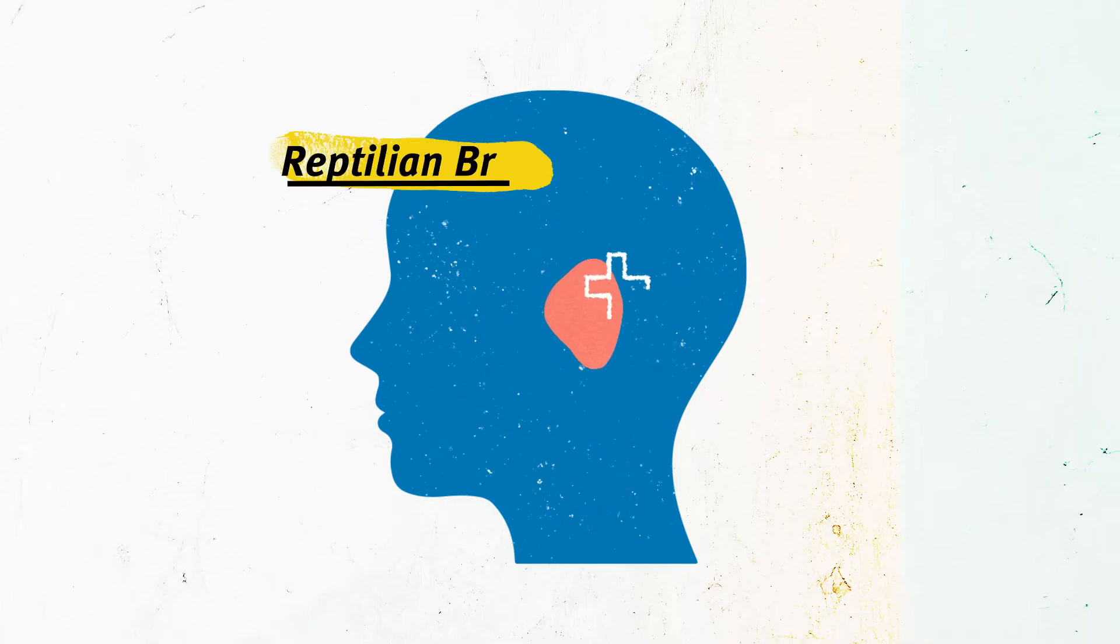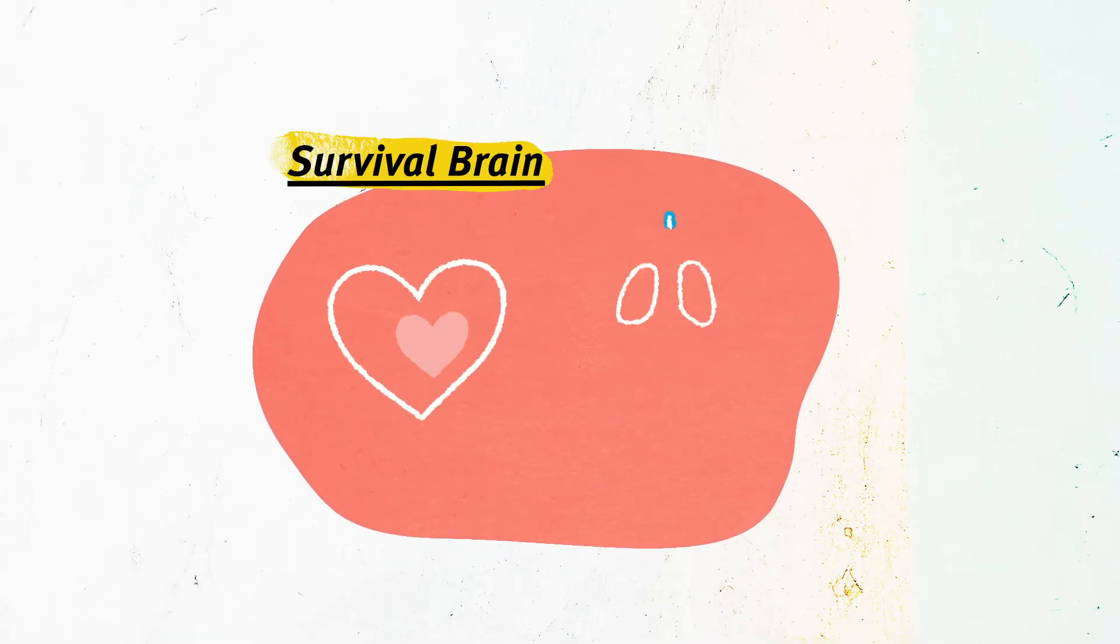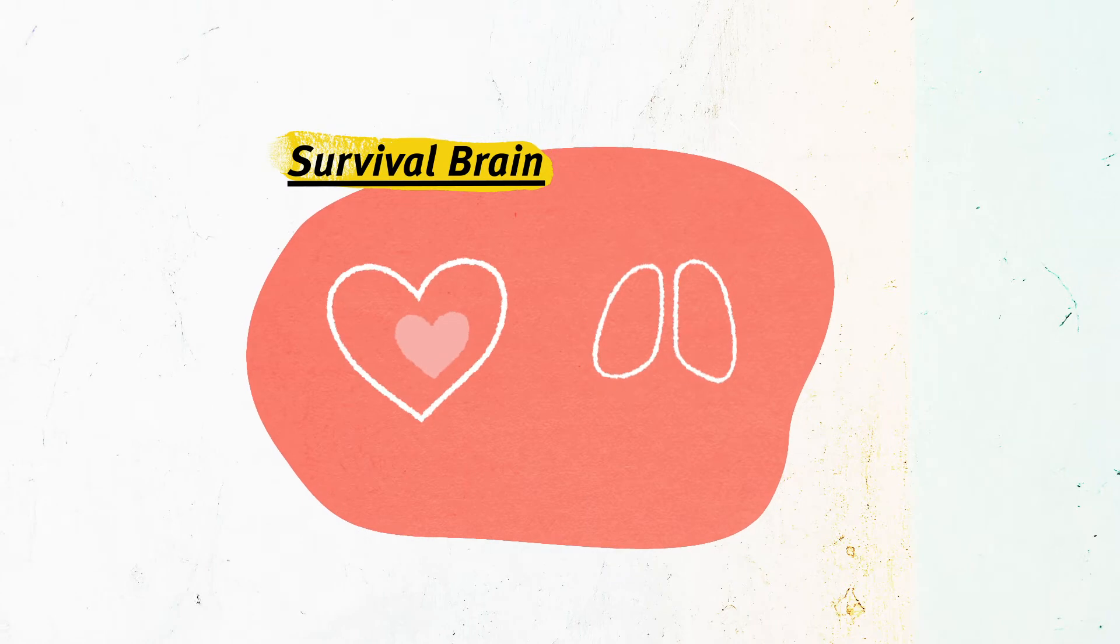The brain at the bottom, often called the reptilian brain, is your survival brain. It keeps your heart beating, keeps you breathing, it's the home of fight, flight or freeze.